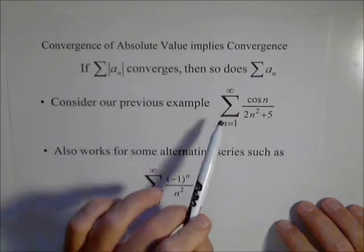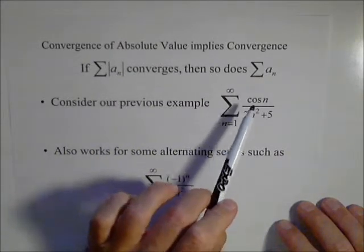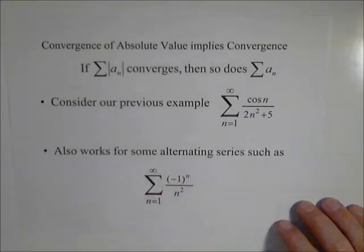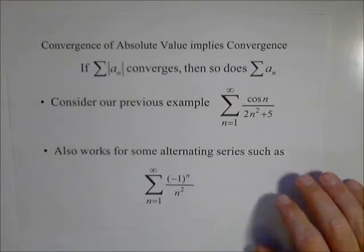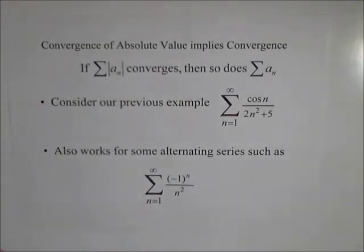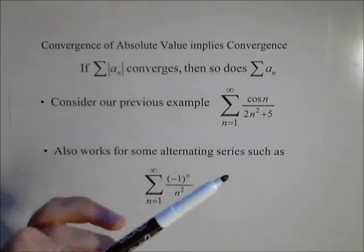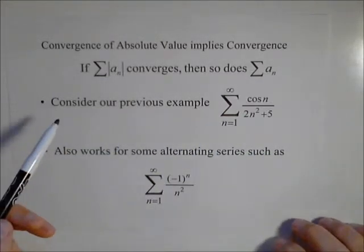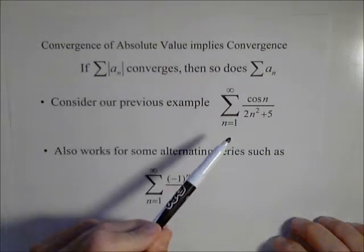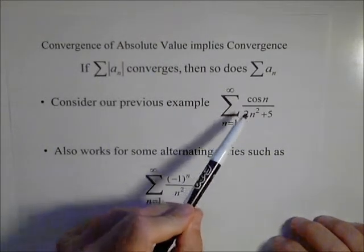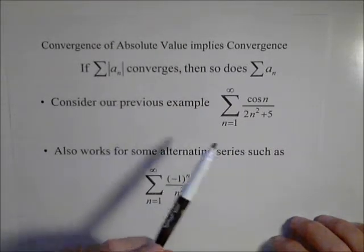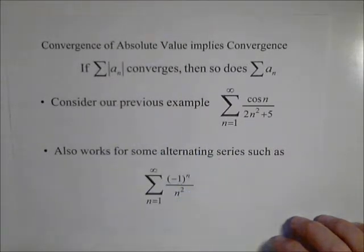The example I'd given in the previous video was cosine of n over two n squared plus five. We were looking at that with the limit comparison test, and what we were finding is that this wasn't going to work — it didn't qualify for the limit comparison test because all its terms were not positive. In fact, every so often it has negative terms because it's oscillating.